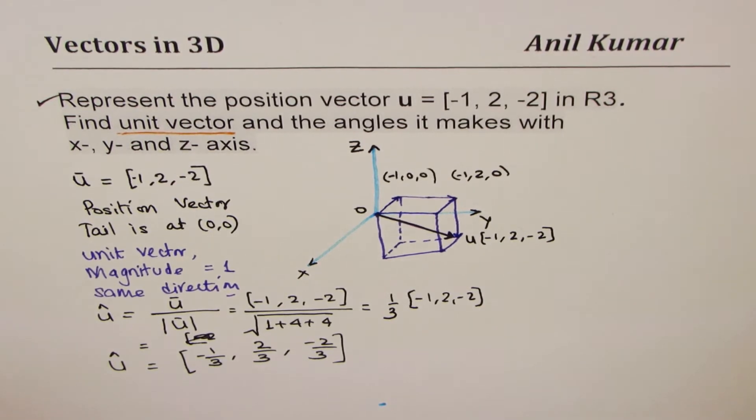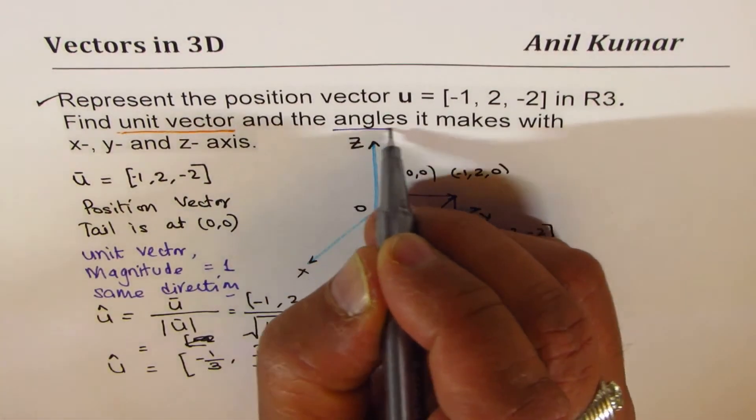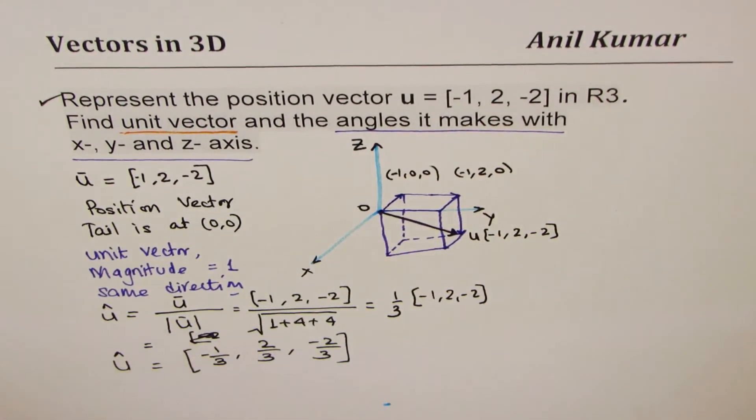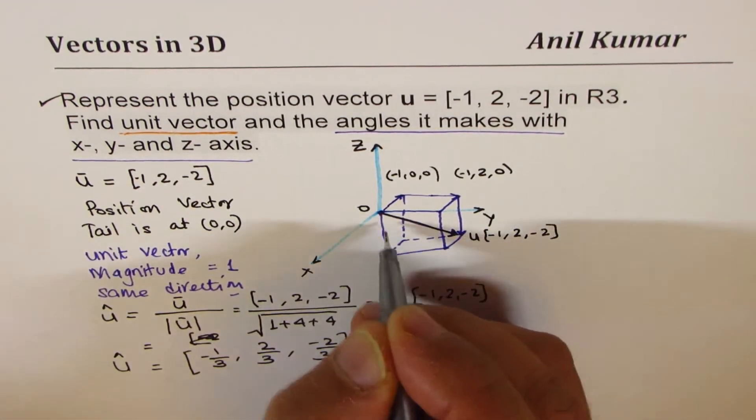The last part here is about direction numbers. The angle it makes with x, y, z axis. Now, as you can see, the particular vector we have, u, makes an angle with x.